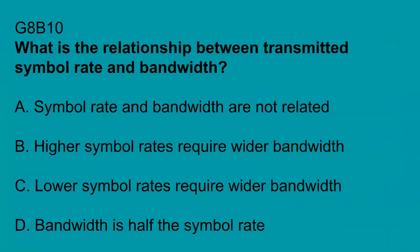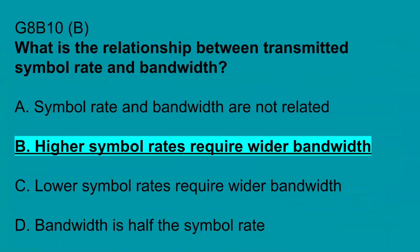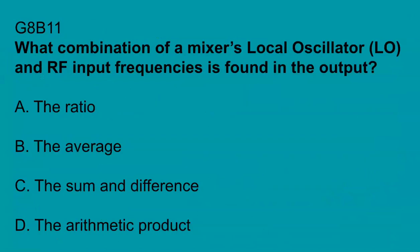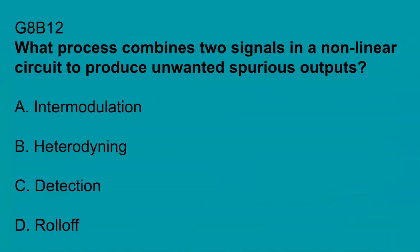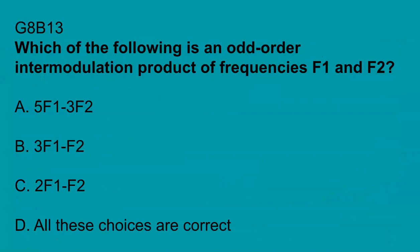G8B10: What is the relationship between transmitted signal rate, symbol rate, and bandwidth? Higher symbol rates require wider bandwidths. G8B11: What combination of a mixer's local oscillator and RF input frequencies is found in the output? The sum and difference. G8B12: What process combines two signals in a non-linear circuit to produce unwanted spurious outputs? Intermodulation. G8B13: Which of the following is an odd order intermodulation product of frequencies F1 and F2? 2F1 minus F2.